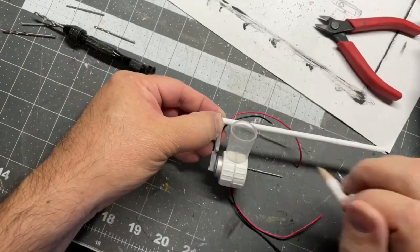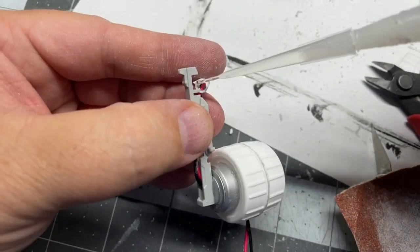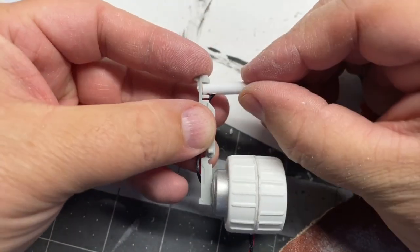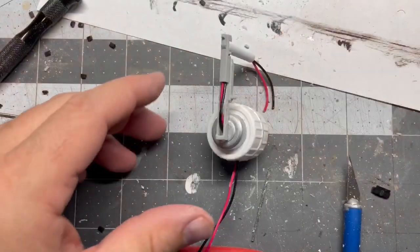I'm measuring where I need to cut this for the little stem. Glue that on. Got my wiring all running through there. That looks good.